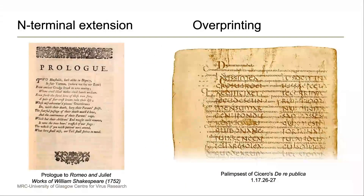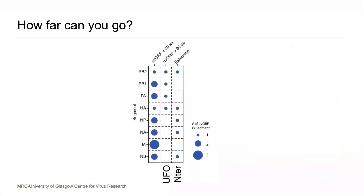If you want an example of what both of these are doing: the N-terminal extension is rather like the prologue at the start of a piece of text, whereas the overprinting with a frame shift is much more like a palimpsest — the practice when you had very limited resources of just writing straight over the text which you already had. In total, in five of the eight influenza A gene products, there was a possible N-terminal extension of a gene, and in four of them there was the possibility of having an overprinted open reading frame which is more than 30 amino acids in length — in other words, large enough to function as a small protein.